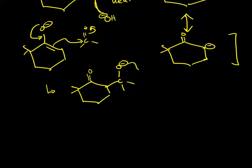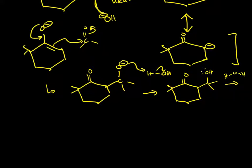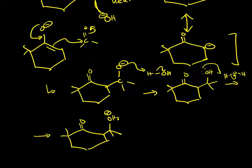Now this O minus is going to grab some of that water that was in solution here. Reforms our OH from the base catalyzed mechanism. This is going to grab another acidic hydrogen from some water floating around. And we now have a good leaving group. So another OH molecule.